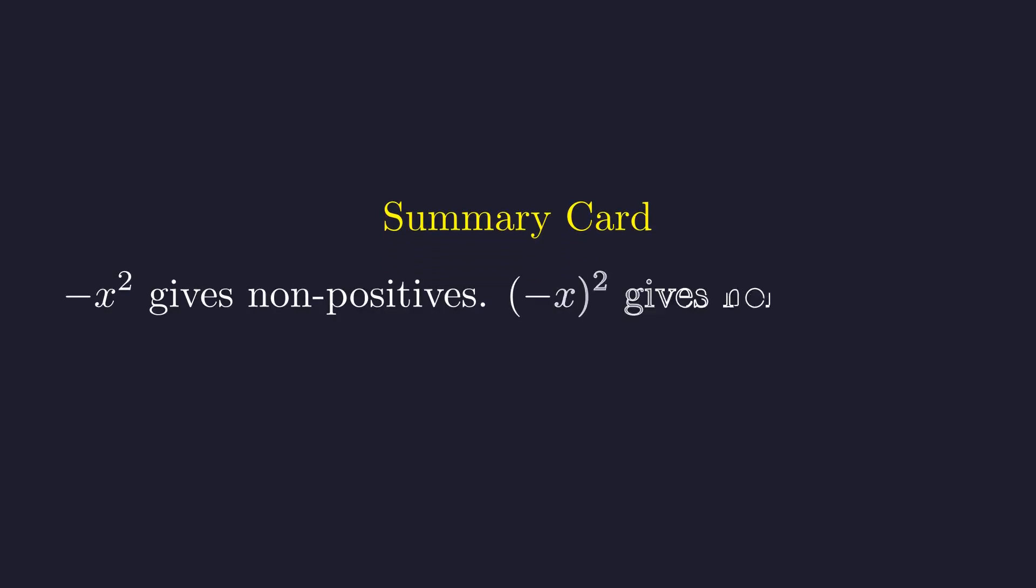Here's the key pattern to remember. Negative x squared always gives you negative or zero results, while the quantity negative x squared always gives you positive or zero results.